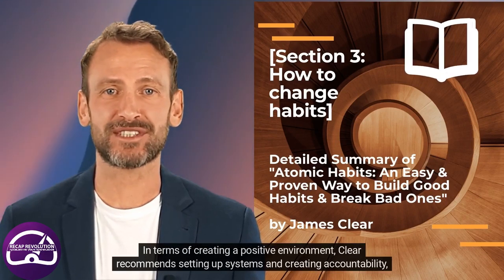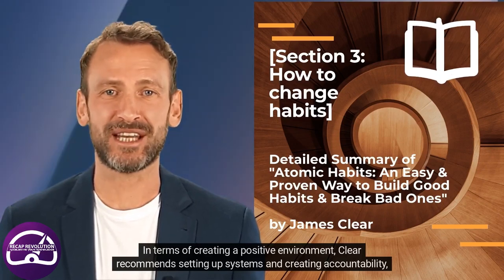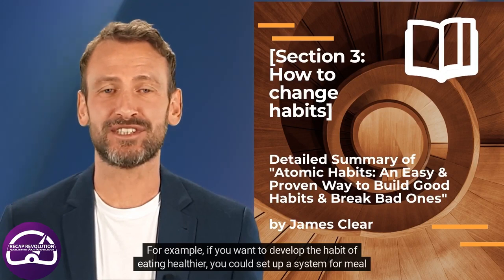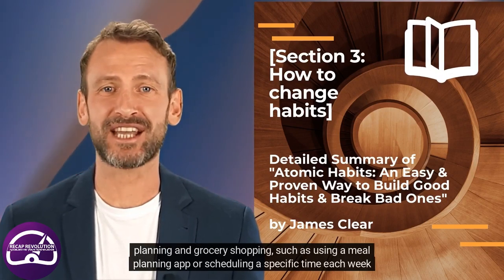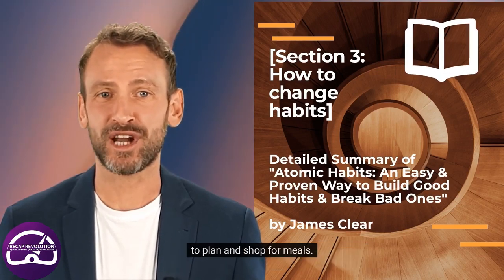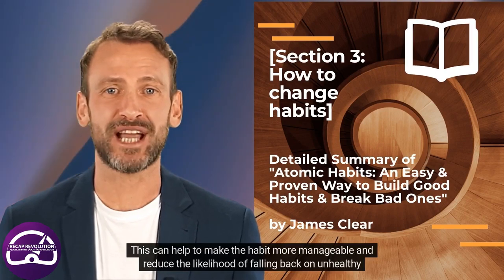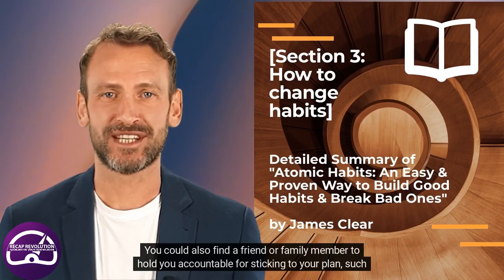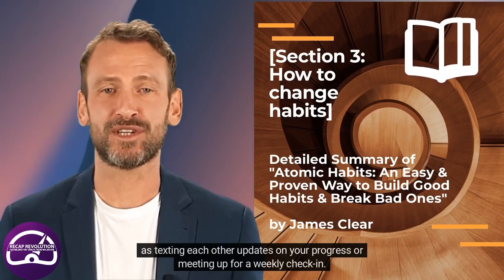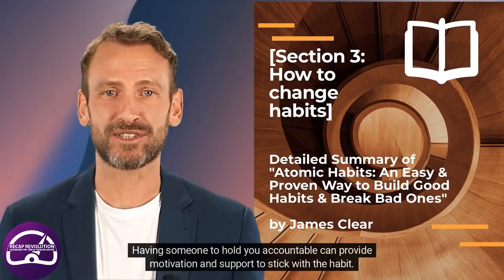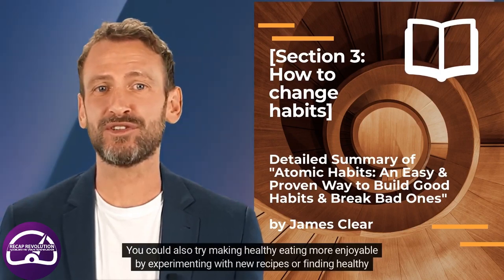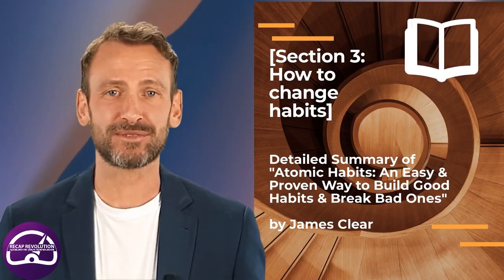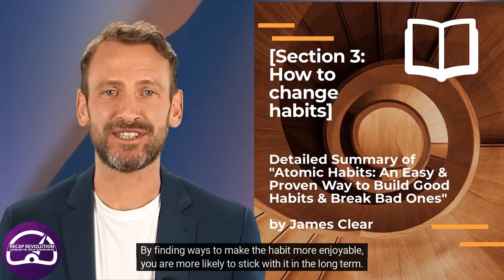In terms of creating a positive environment, Clear recommends setting up systems and creating accountability, as well as finding ways to make good habits more enjoyable. For example, if you want to develop the habit of eating healthier, you could set up a system for meal planning and grocery shopping, such as using a meal planning app or scheduling a specific time each week to plan and shop for meals. You could also find a friend or family member to hold you accountable, and try making healthy eating more enjoyable by experimenting with new recipes or finding healthy options of your favorite foods.